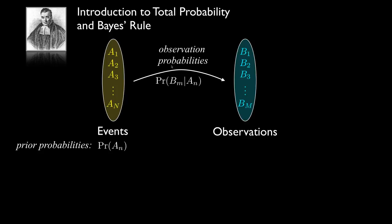For problems like this, we'll typically have what I call observation probabilities — conditional probabilities that tell us the probability of an observation occurring given that a particular underlying event had occurred. For instance, the probability that we see B3 given that A2 had occurred is captured as P(B3 | A2). For every underlying event, we'll have a set of probabilities on the observations, and the sum over all observations for a particular A sub N will always equal 1.